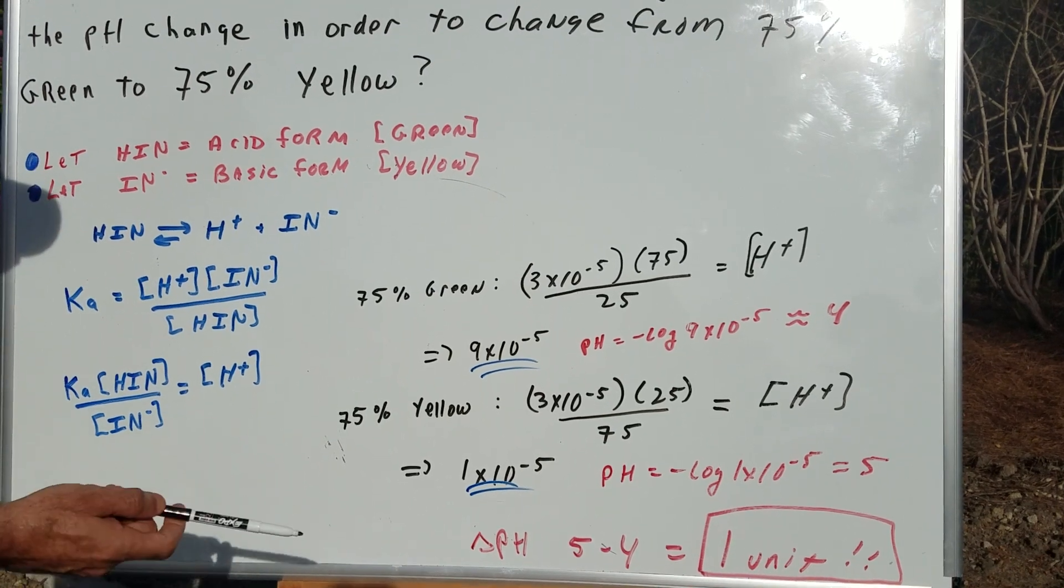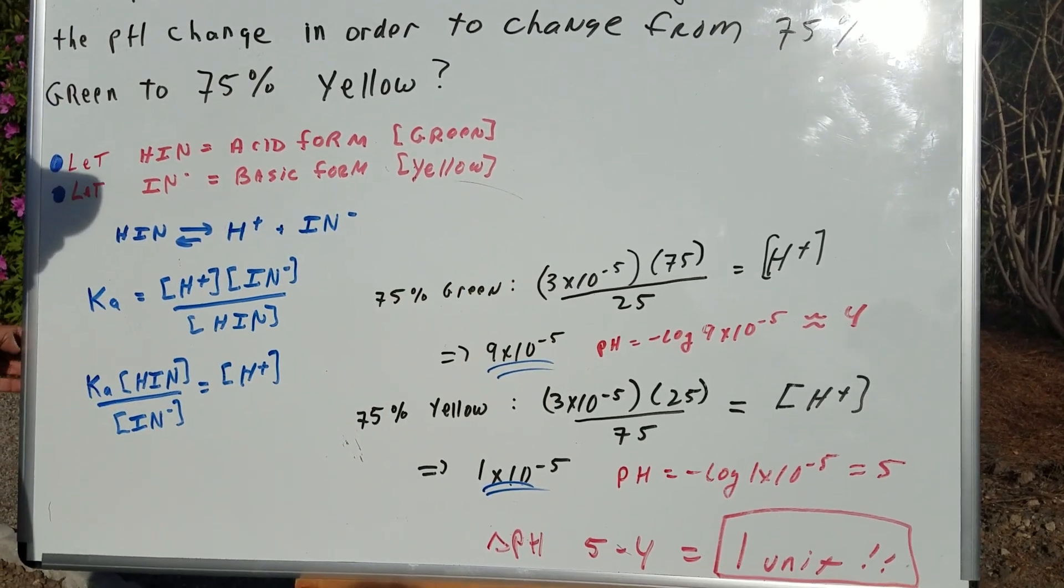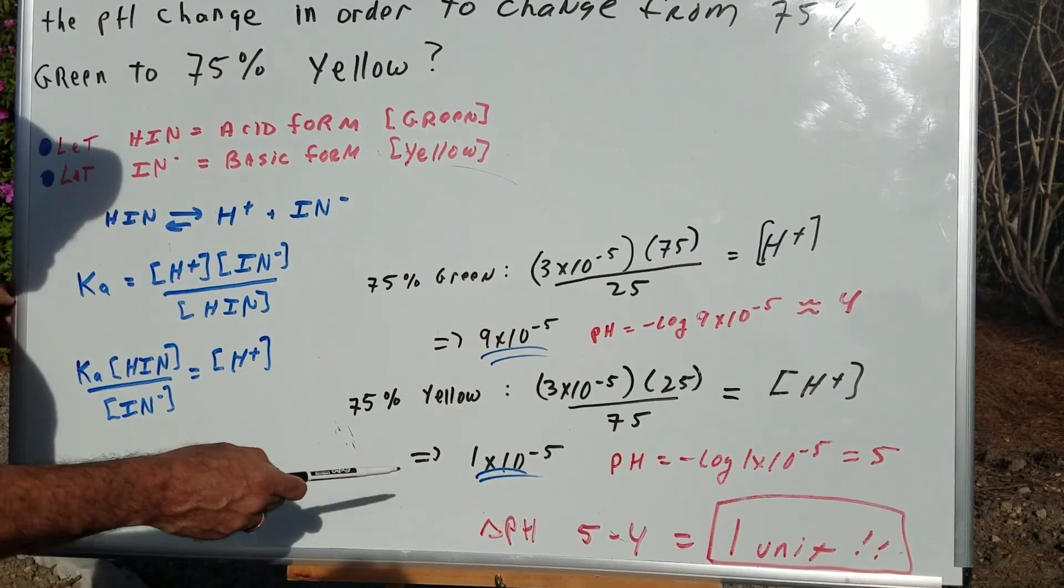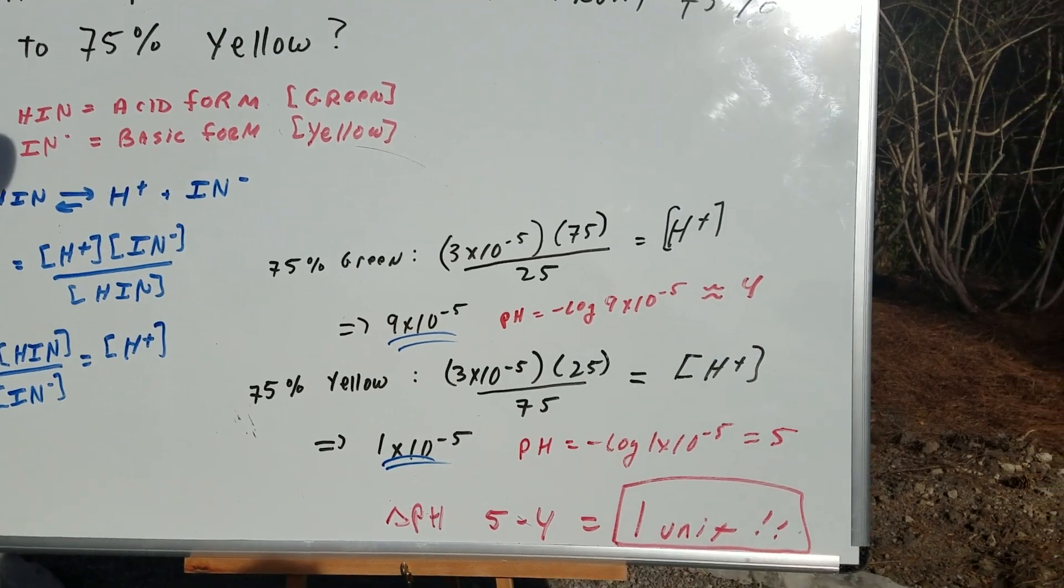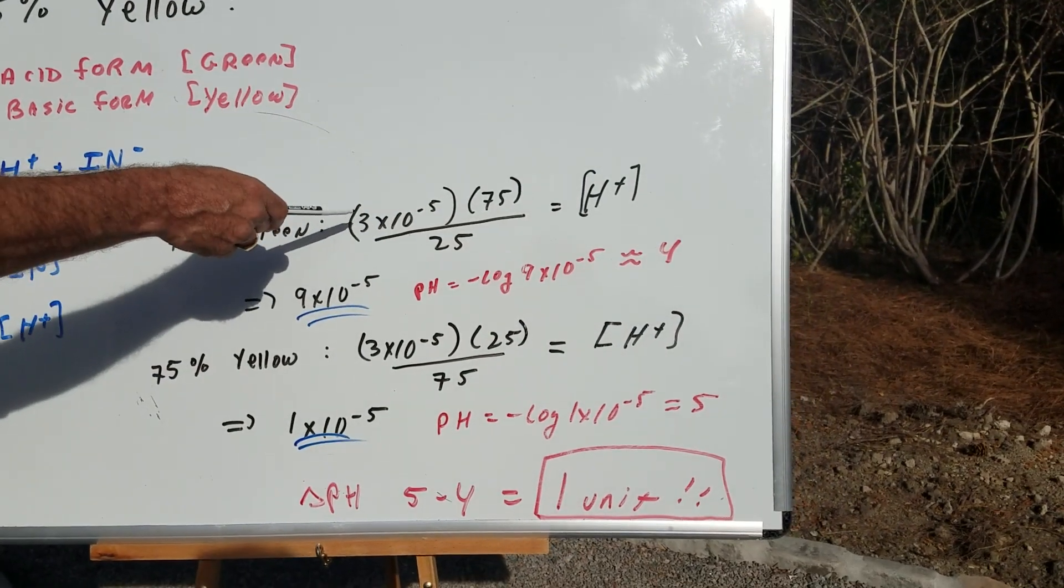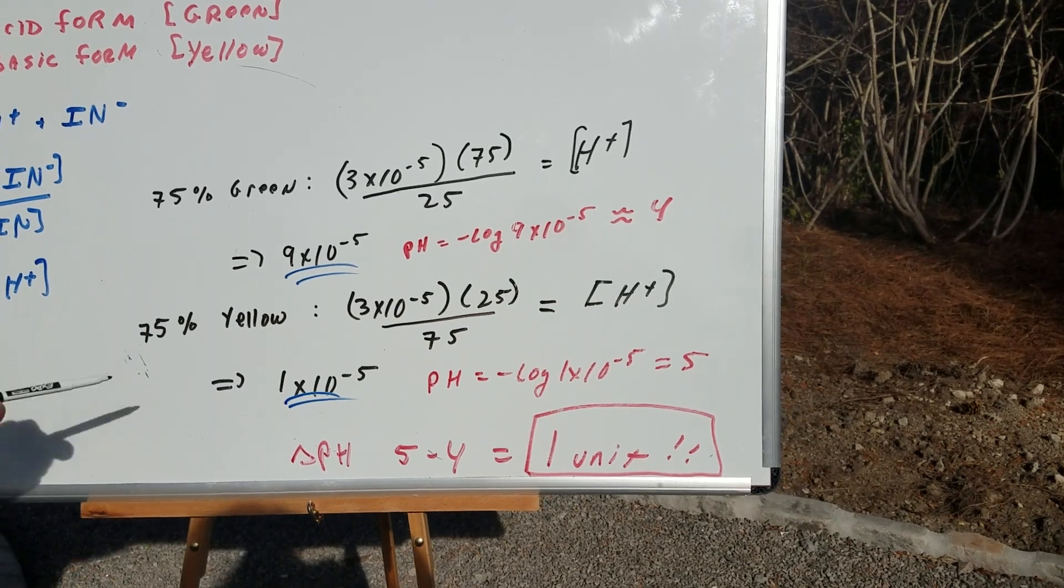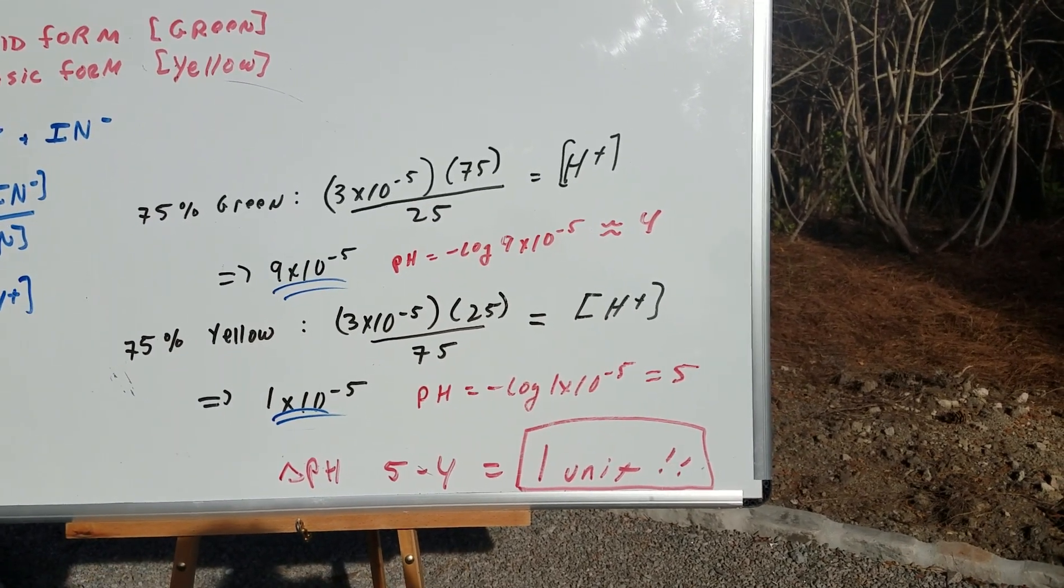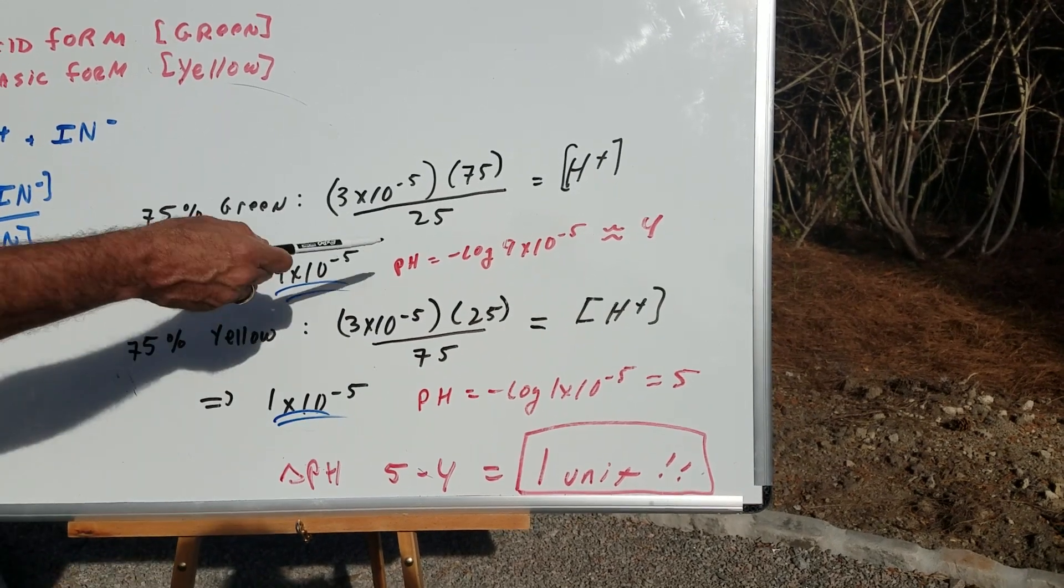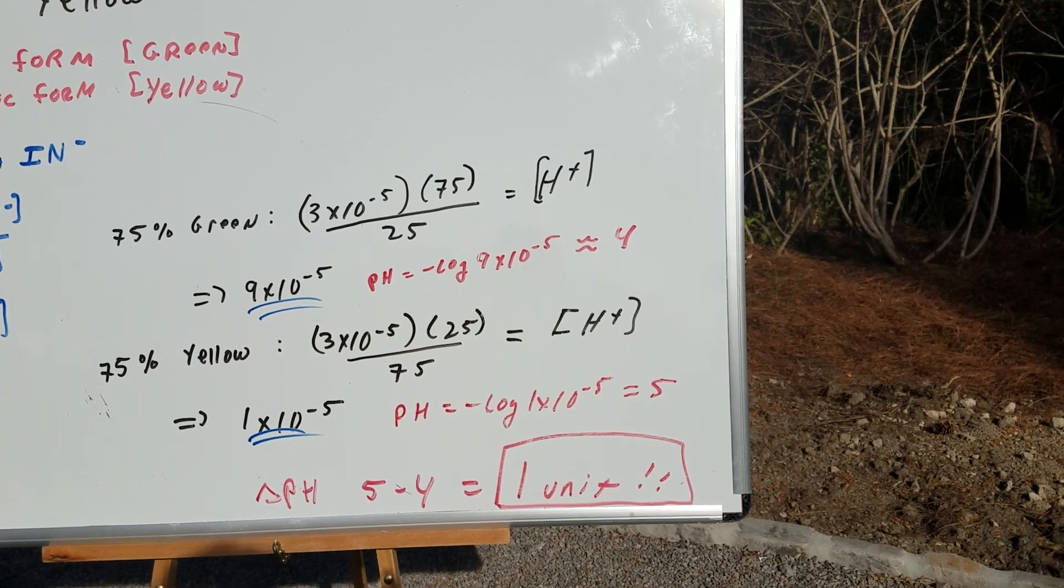The green is 75, and obviously if that's 75, the IN⁻ is 25. I've got you perfectly set up with the numbers: 75 over 25 is 3, so 3 times 3×10⁻⁵ is 9×10⁻⁵. 9×10⁻⁵ is the hydrogen ion concentration. Taking the negative log of that gives me a value very close to 4.